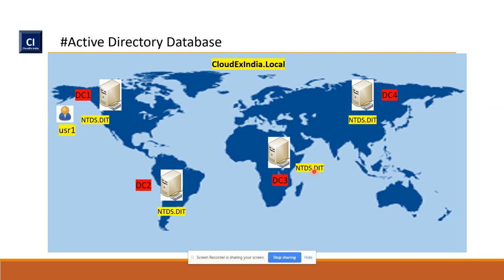Take an example: suppose you created a user called User1 on DC1. What happens is that user is stored inside the ntds.dit on DC1. I've presented this as two different sites. During the replication interval, once replication starts, DC1 replicates that same information to DC2.